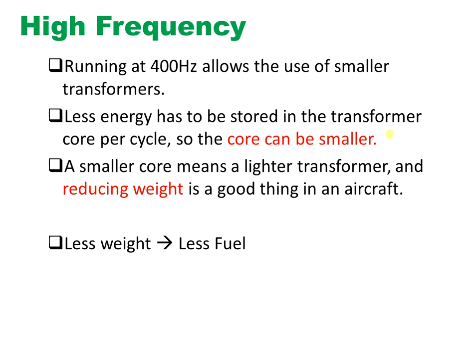The main reason for using 400 Hz is that it requires smaller transformers — the core size is smaller. Every cycle, the transformer core flux per cycle is less. The advantage is a smaller transformer core, which leads to less weight. Less weight in a flight means less fuel is wasted. That's the reason: the high frequency of 400 Hz ensures transformer core sizes become smaller, which ultimately leads to lesser fuel consumption.